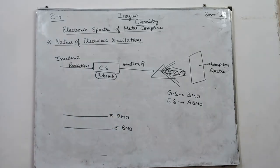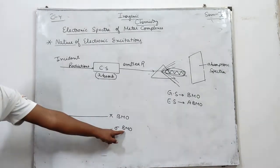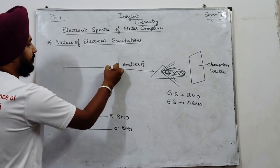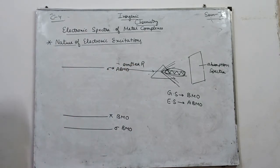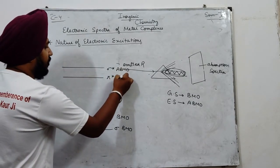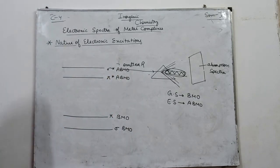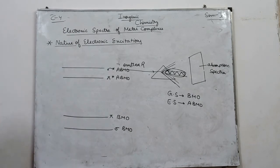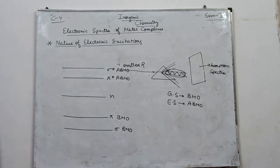We have the sigma bonding molecular orbital and the pi bonding molecular orbital. Sigma bonding has lower energy; pi bonding has more energy. The corresponding anti-bonding orbitals are sigma-star and pi-star. We also have another orbital called the non-bonding molecular orbital, abbreviated NBMO.